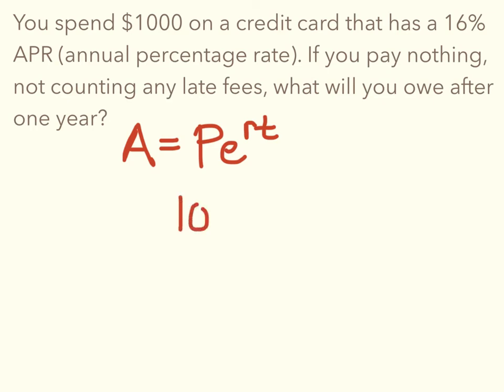And how much do you owe? Let's calculate that. We have our equation, A equals PE to the RT. We know we started with $1,000.